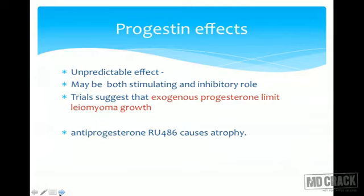Regarding the effect of progesterone on myoma — the effect is unpredictable, and may be stimulating or inhibitory. Trial suggests that exogenous progesterone limits the growth, but antiprogesterone (RU486) causes atrophy of the fibroid.